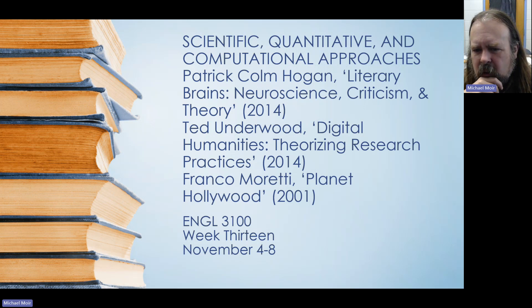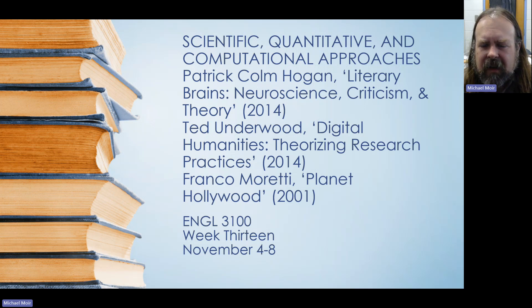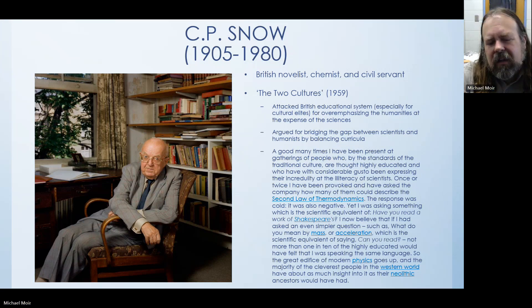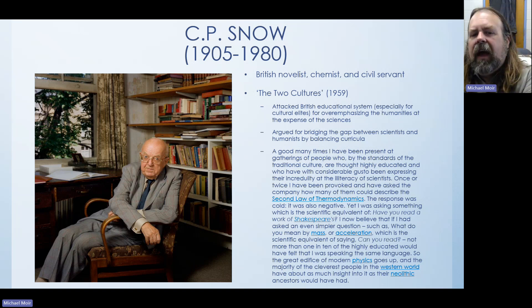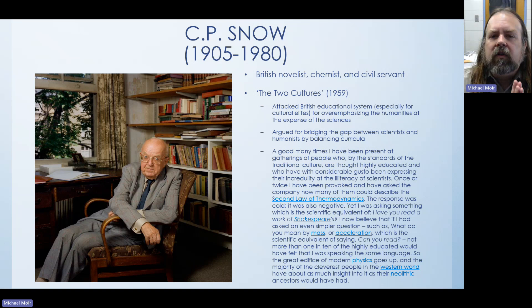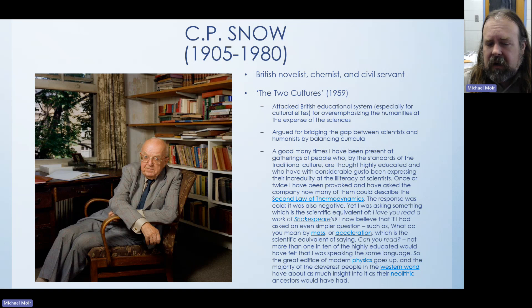It's worth acknowledging that for a long time science and the humanities were not really considered a natural fit with each other. In 1959, a British novelist, chemist, and civil servant by the name of C.P. Snow delivered a lecture at Cambridge that he called "The Two Cultures" — or at least the first half was called that. The two cultures he was talking about were the culture of the sciences and the culture of humanists.